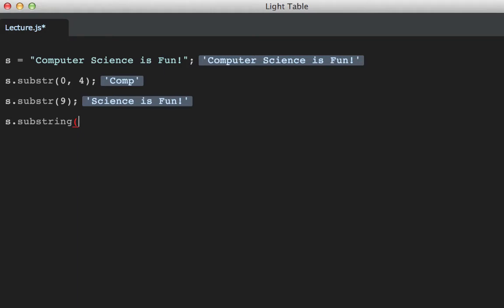Substring is for using a beginning index and an ending index. The total length will be the second argument minus the first argument, nine in this case, eight letters in computer and one space character. Here too, you can omit the second argument to return the rest of the string.